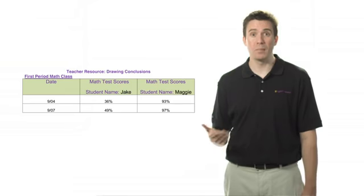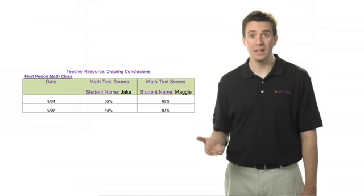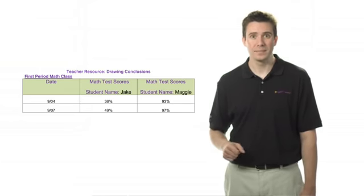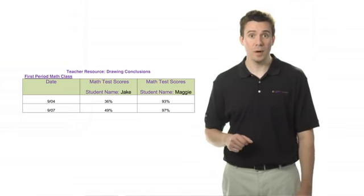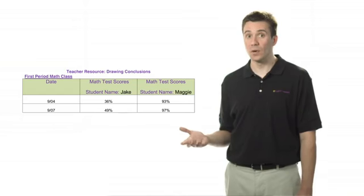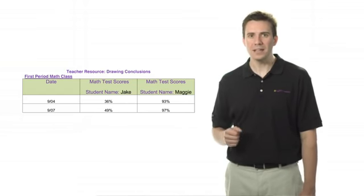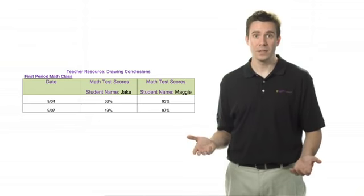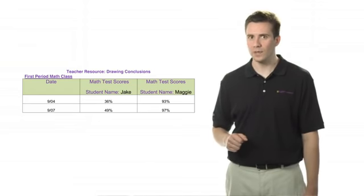If you were to form conclusions about boys and girls based on this limited data, it may not be correct. Can you draw a fair conclusion about Maggie and Jake? You might be able to say that Jake scores lower than Maggie on math tests. But maybe not, since we have such a small sample size. Let's take a look at the next four tests.